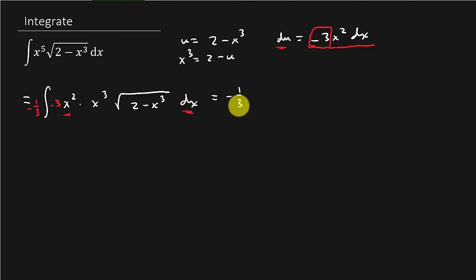So let's make all of our substitutions. So I get negative 1 third integral and that's going to be 2 minus u times the square root of u, but I'm going to write the square root of u as u to the 1 half. And then the negative 3 x squared dx, I'm going to replace that with du. And so now I've got negative 1 third times the integral 2 u to the 1 half minus u to the 3 halves du. And now we're ready to integrate.